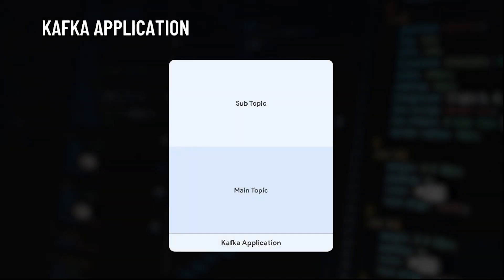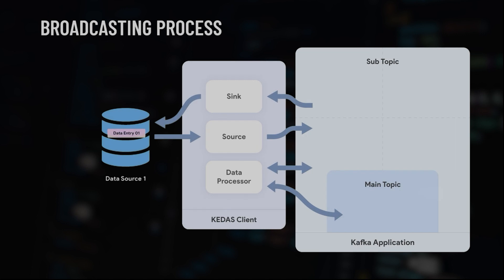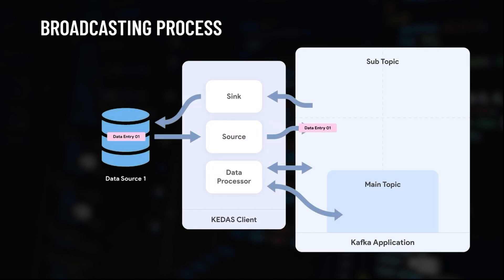Here at the center, you can see the Kafka application has two types of topics: the main topic and the subtopic. When a data change is detected in a data source, the source connector captures it and passes it to the Kafka application. The entry then goes to the subtopic and is recorded within the topic.